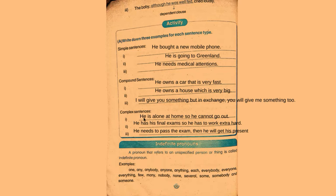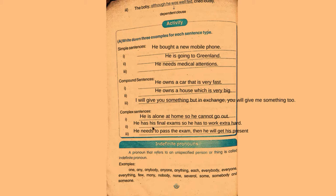Now for complex sentences: 'He is alone at home, so he cannot go out.' 'He has his final exams, so he has to work extra hard.' 'He needs to pass the exam, then he will get his present.' In these sentences: 'He is alone at home' is the independent clause; 'so he cannot go out' is the dependent clause. 'He has his final exams' is independent; 'so he has to work extra hard' is dependent. 'He needs to pass the exam' is independent; 'then he will get his present' is also independent.